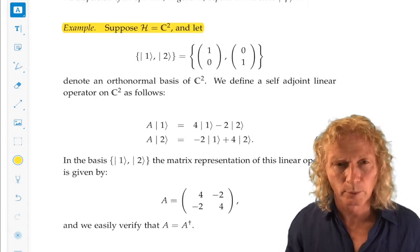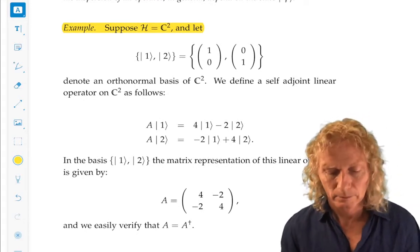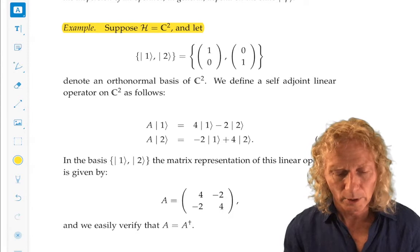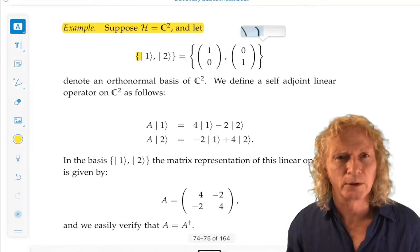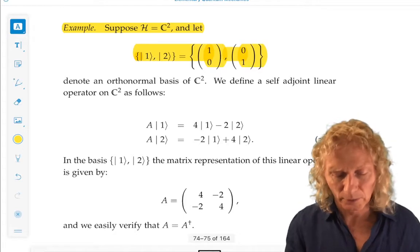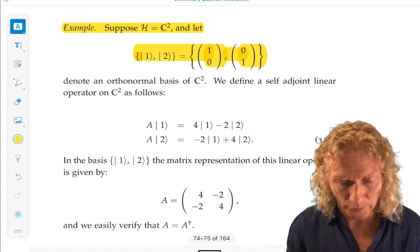The complex inner product space, or the state space, is C², and we want to consider this basis on C², the simple basis, the standard basis. And that is an orthonormal basis on C².